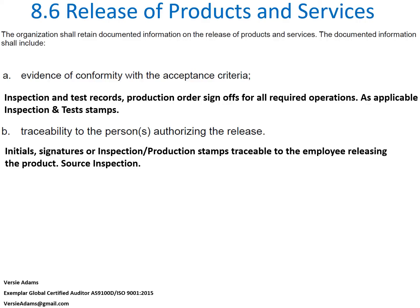For (b), traceability to the persons authorizing release: I'm looking for initials, signatures, or inspection and production stamps that are traceable to the employee releasing the product. Also, as applicable, source inspection — there are times when the customer states that the product cannot be shipped until a source inspection release document is on file. If the purchase order or drawing states a source inspection requirement, I'll expect to see that sign-off either on the traveler or as a separate source inspection report. I need to be able to trace each operation back to the person who released it.